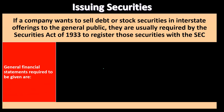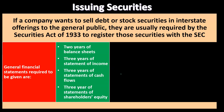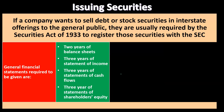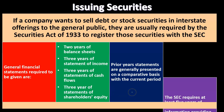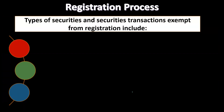General financial statements required for this process will typically include two years of balance sheets, three years of statements of income, three years of statements of cash flows, and three years of statements of stockholders' equity. Prior years' statements are generally presented on a comparative basis with the current years. The SEC requires at least five years of selected financial information providing key figures.